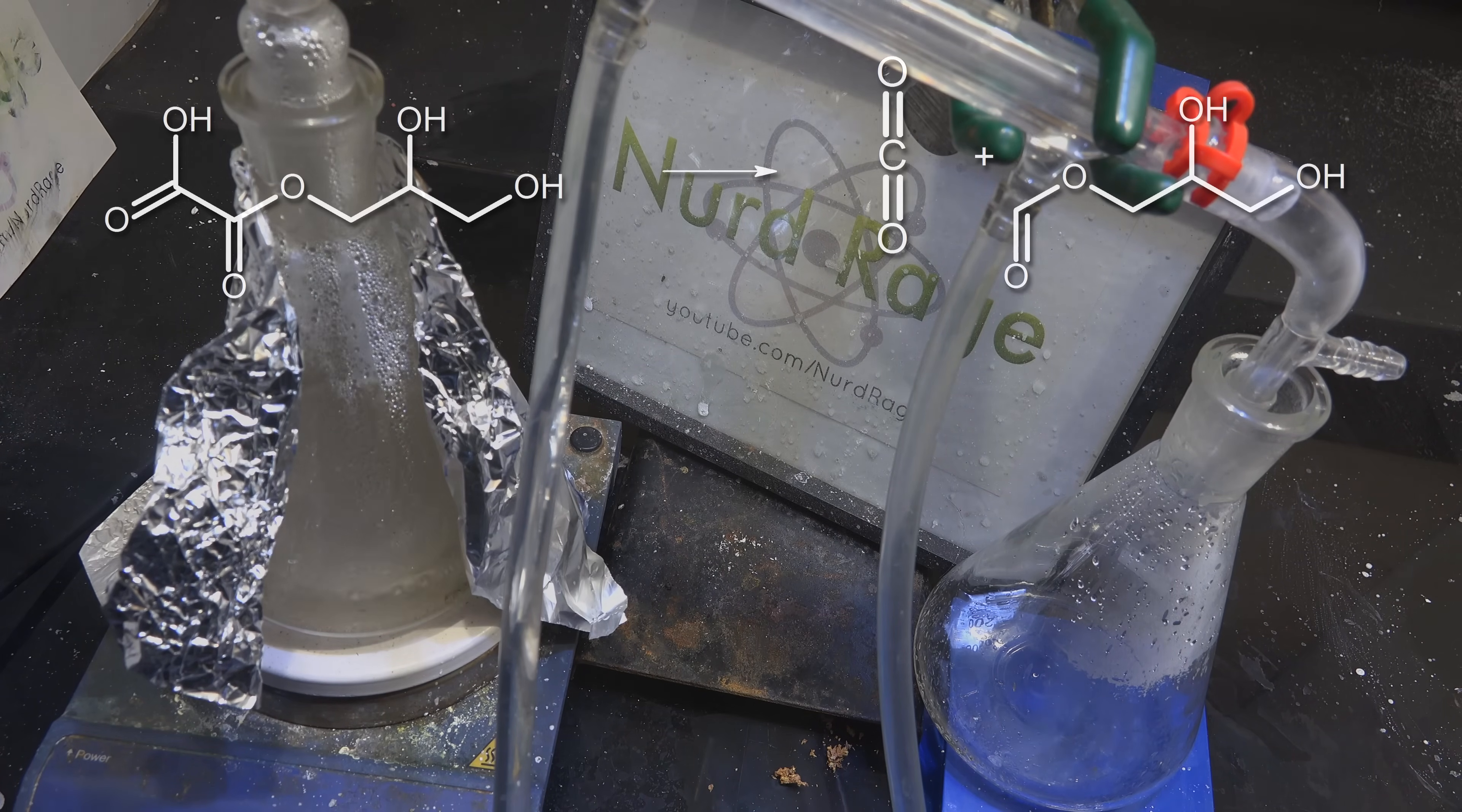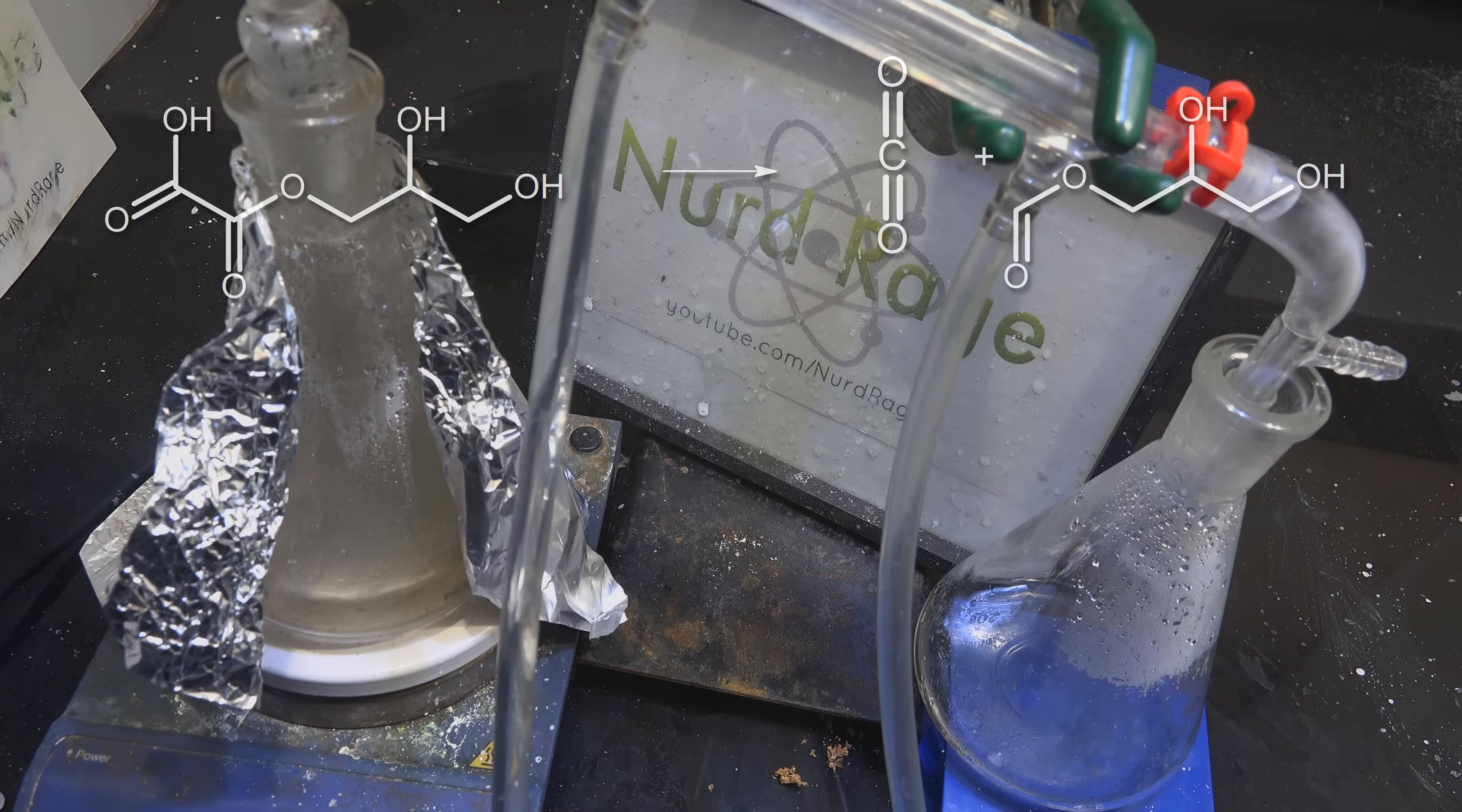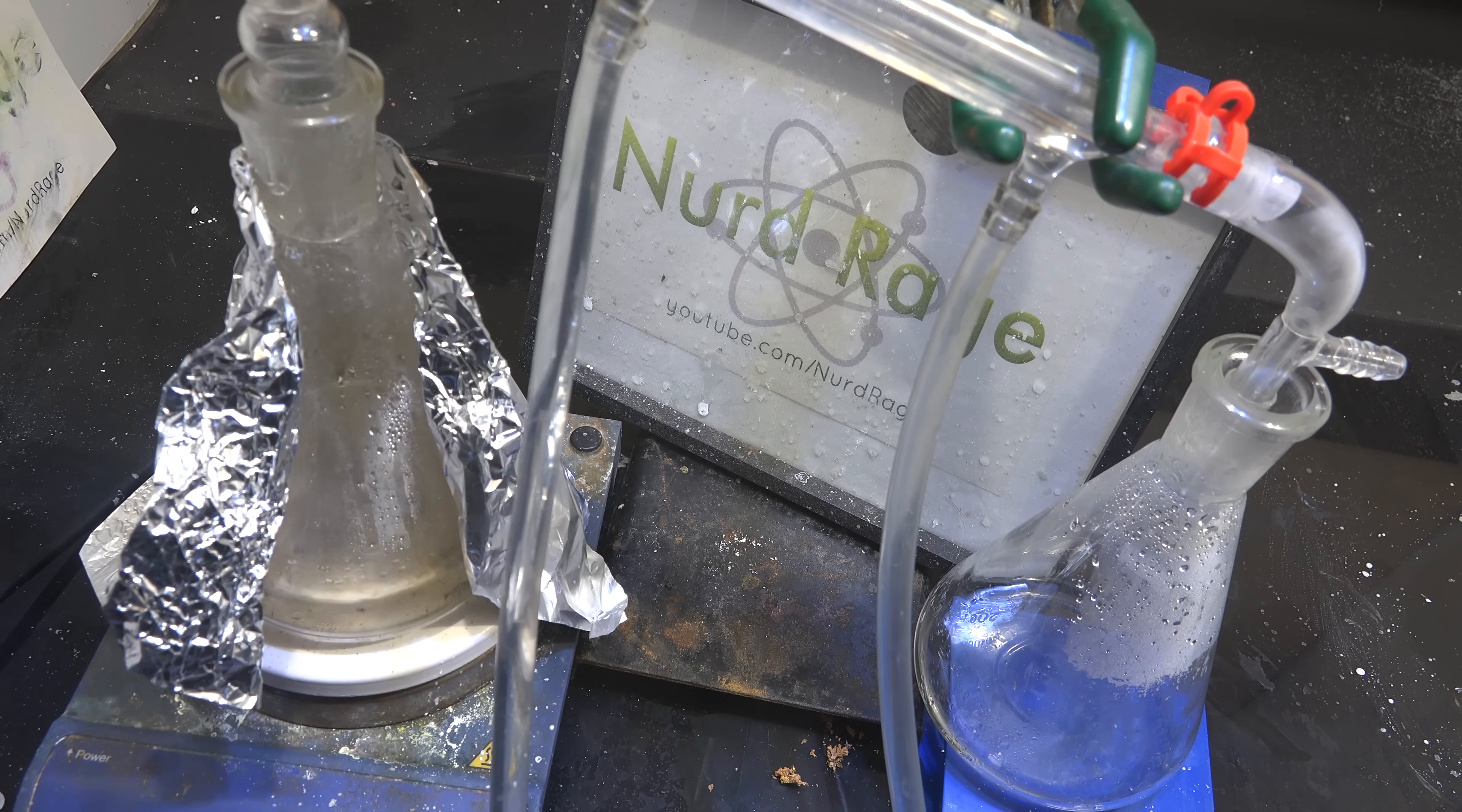As the heating continues the glycerol oxalate decomposes into glycerol monoformate and carbon dioxide. This is where we're essentially producing formic acid, although it's still esterified with glycerol. Now if there was some water present it would hydrolyze with the glycerol monoformate to produce glycerol and formic acid. But most of that water has already boiled off so we need to put some back in.